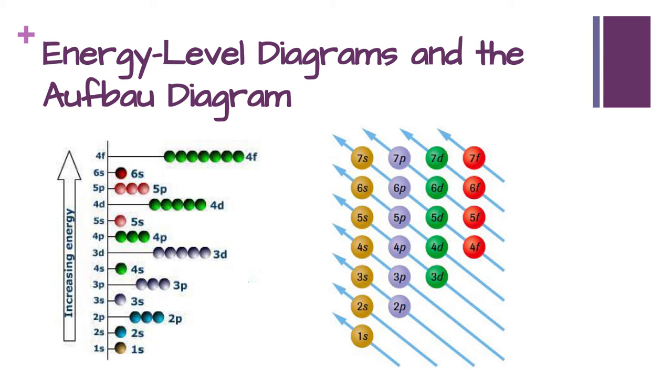In order for us to start filling orbitals, we need to know what order they get filled in, and this is where the Aufbau diagram comes in. All of the different sublevels do have a very specific order in which they get filled.